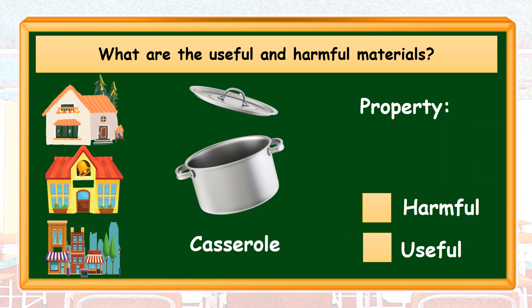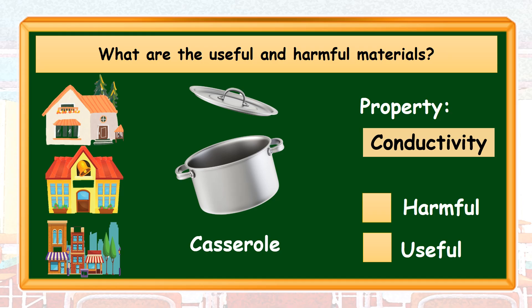And the last material that we have is a casserole. A casserole possesses the property of conductivity because it allows heat to pass through. Based on its property, a casserole can be harmful or useful. Its harmful effect is it can cause blisters if you accidentally touch the hot portion of it. While for its usefulness, it allows us to cook our food.